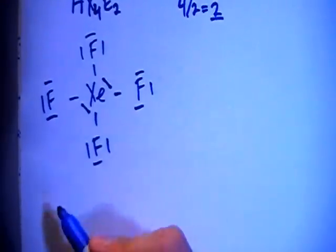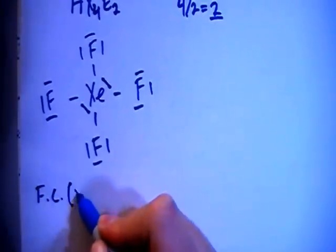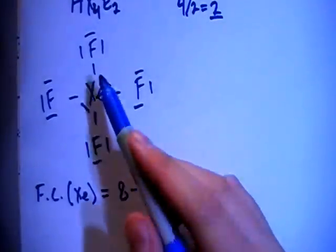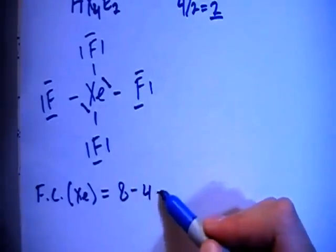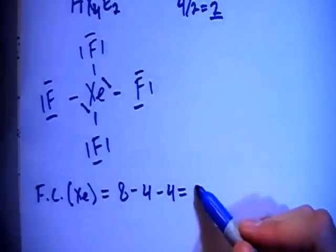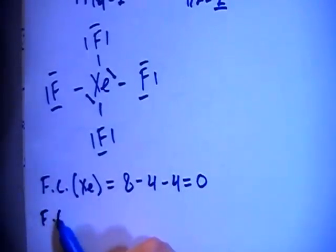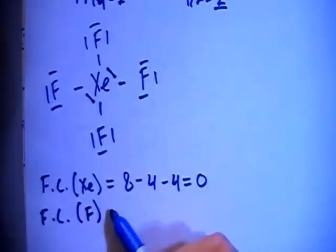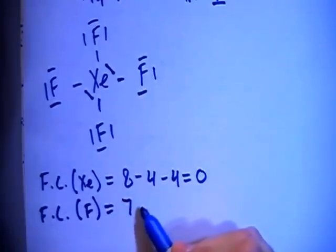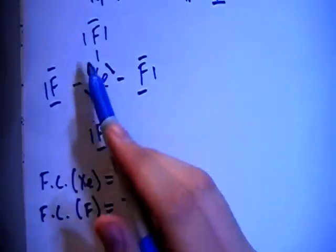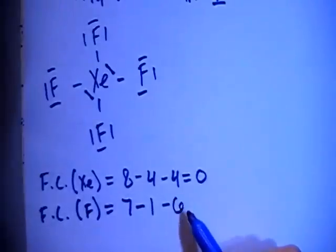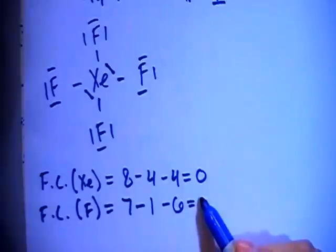So let's go ahead and check the formal charges. So we can do the formal charge of xenon first. So that's going to be 8 valence electrons brought in minus 1, 2, 3, 4 bonds minus 1, 2, 3, 4 non-bonding electrons for a total overall formal charge of 0. And we can now check the formal charge on each of the fluorines because they all have the same setup. So the formal charge will be the same for each of them. So it's 7 valence electrons brought in minus 1 bond for each fluorine atom minus 1, 2, 3, 4, 5, 6 non-bonding electrons for each fluorine for overall formal charge of 0.